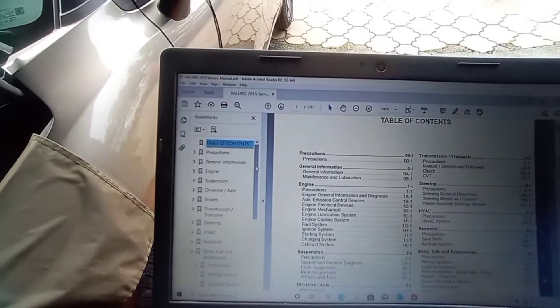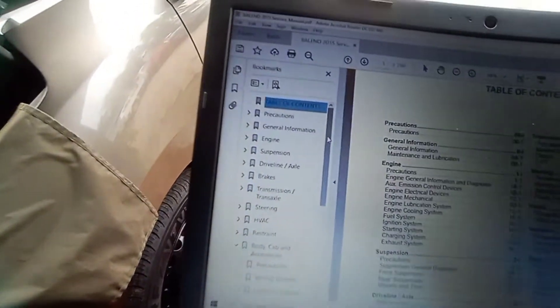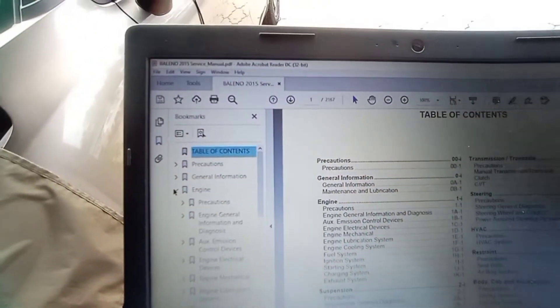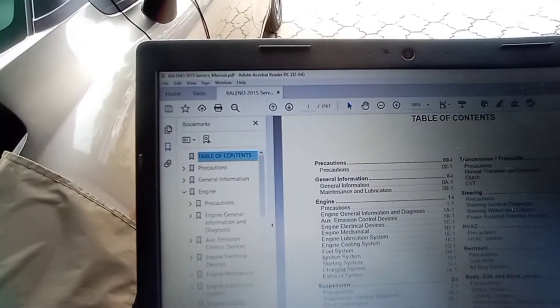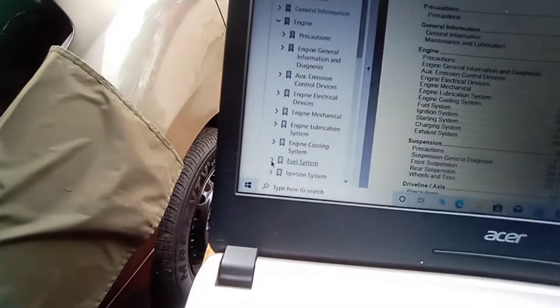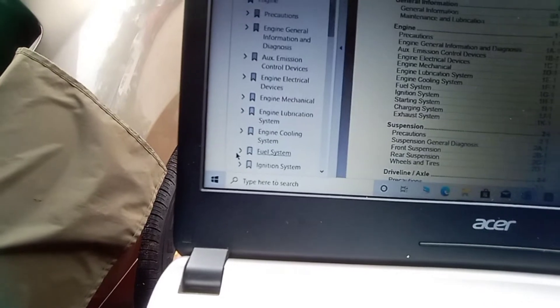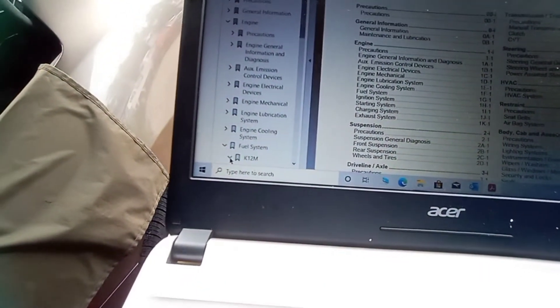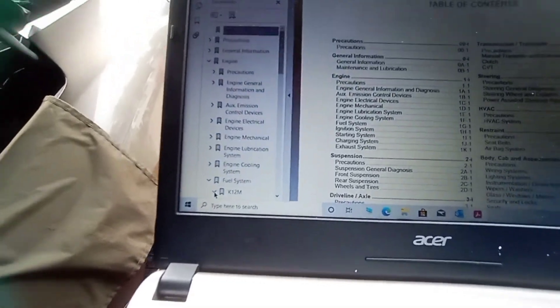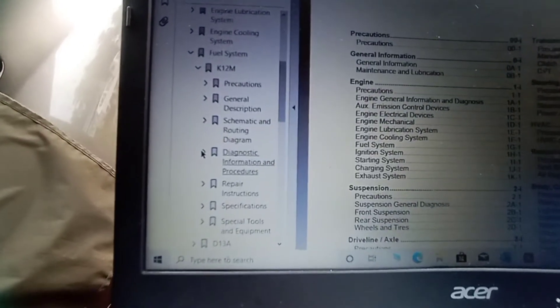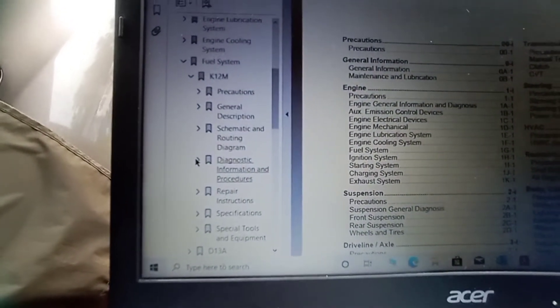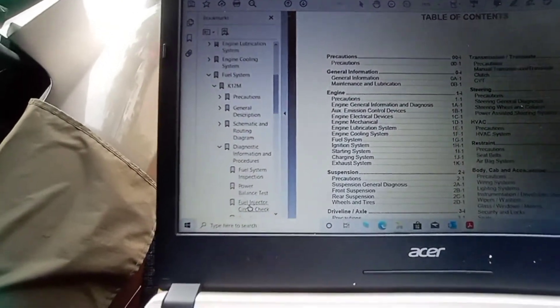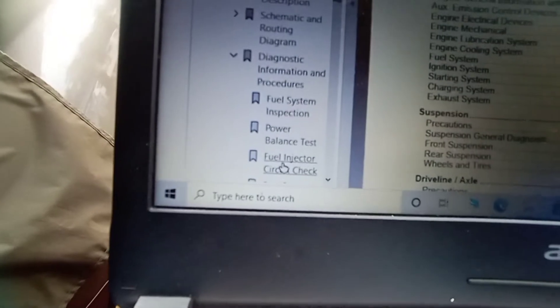Fuel injection system check. First we select engine, select fuel system, select Cateroium, select diagnostic information and procedure, select fuel injector circuit check.